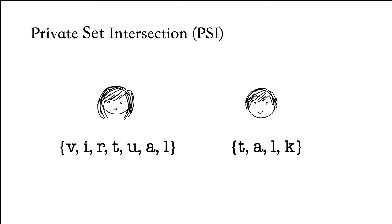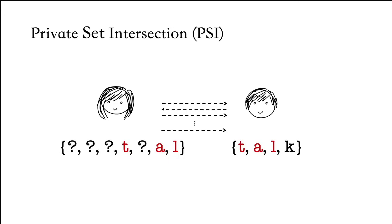In Private Set Intersection, Alice and Bob each have a private set of items as input. They can use a PSI protocol to learn items they have in common. Here Bob, who learns the output, learns the intersection items — namely letters T, A, and L — and learns nothing else about Alice's set.